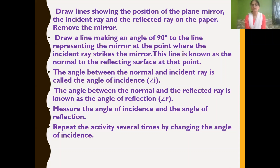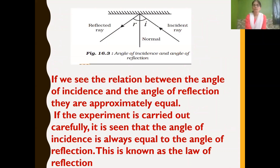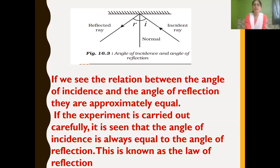If we measure the angle of incidence and the angle of reflection, we see that both will be equal. We repeat this activity several times by changing the angle of incidence. Whenever you change the angle of incidence, you get the angle of reflection also the same. If you carry out the experiment carefully, it is seen that angle of incidence is always equal to the angle of reflection.